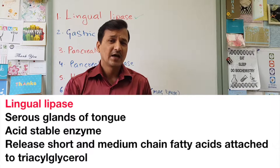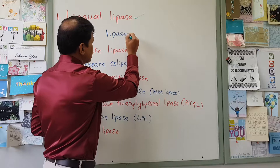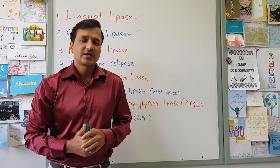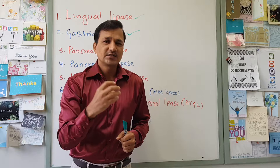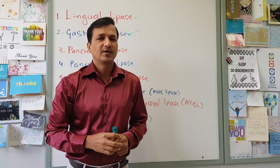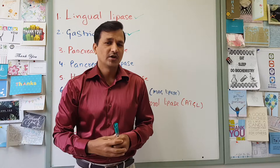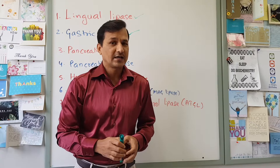Our next lipase is gastric lipase. Gastric lipase is synthesized and secreted by chief cells of the gastric glands. Gastric lipase is again an acid-stable enzyme and it acts on short and medium chain fatty acids attached to triacylglycerol present in the food. So we have two acid-stable lipases: lingual lipase and gastric lipase.